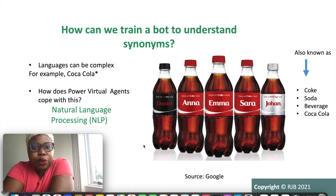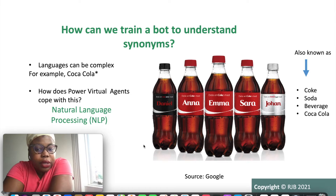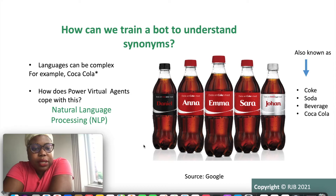Entities can be much more interesting — you can put synonyms with entities. A word can mean different things. For example, what you can see on the screen, this is Coke, right? Some people call it Coca-Cola, some people call it soda or beverage. So a term could mean something else.